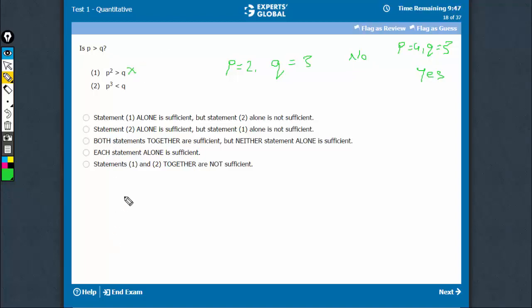In statement 2, in cases such as 2³ is less than 9, where P = 2 and Q = 9, you get no as an answer. P is 2, Q is 9, P is not greater than Q.